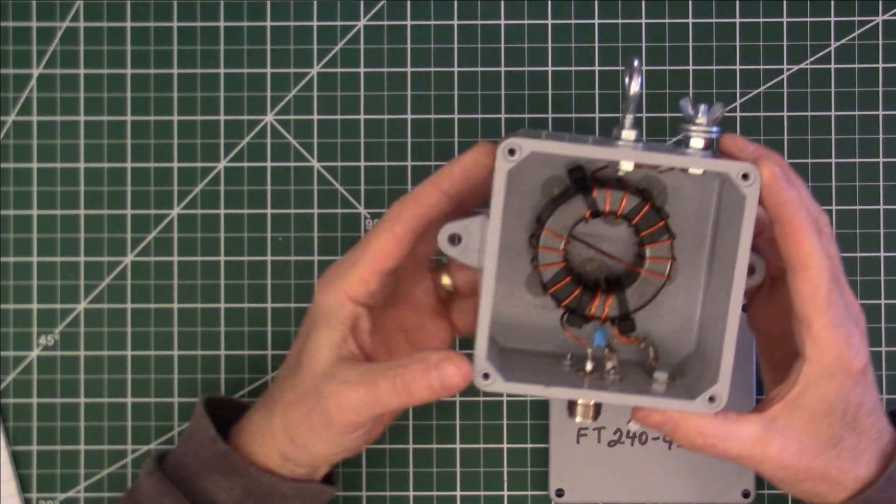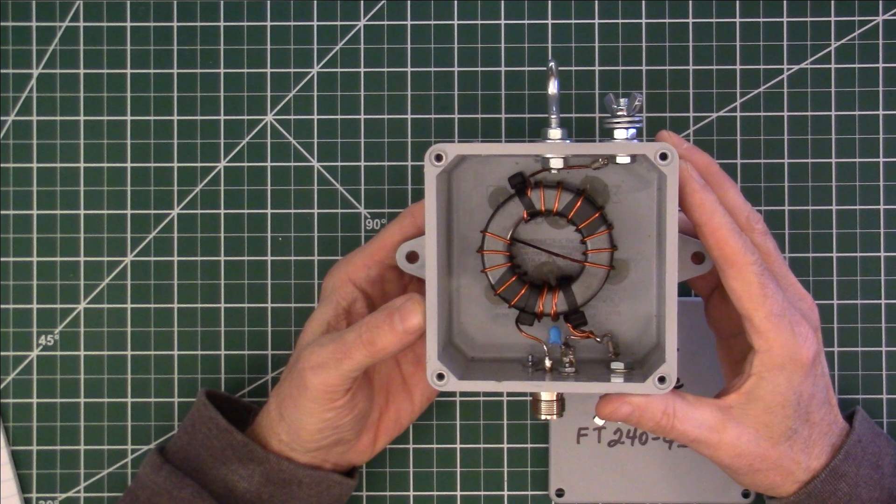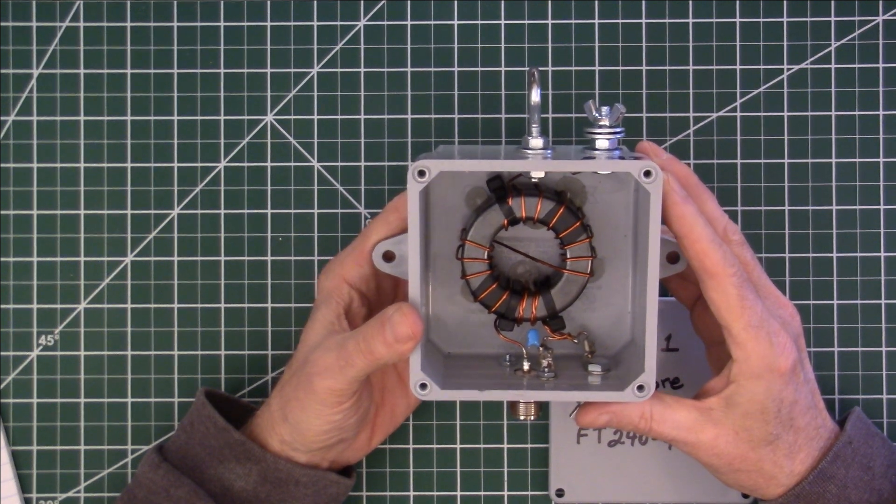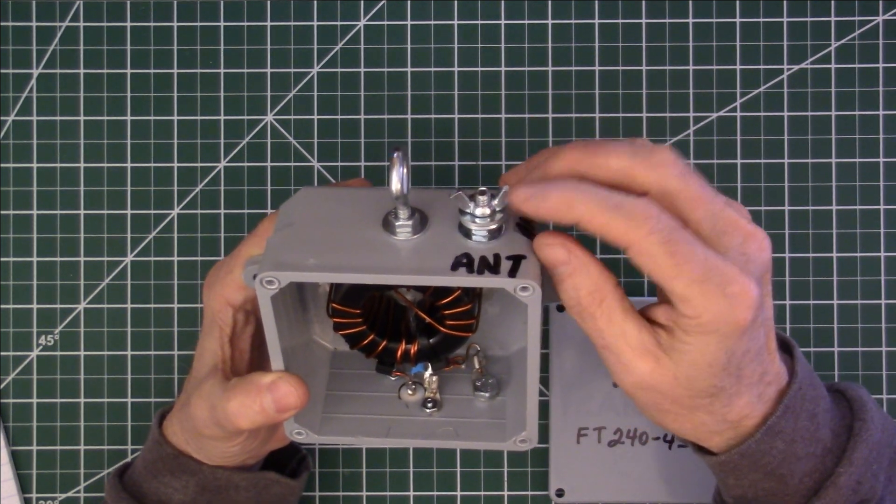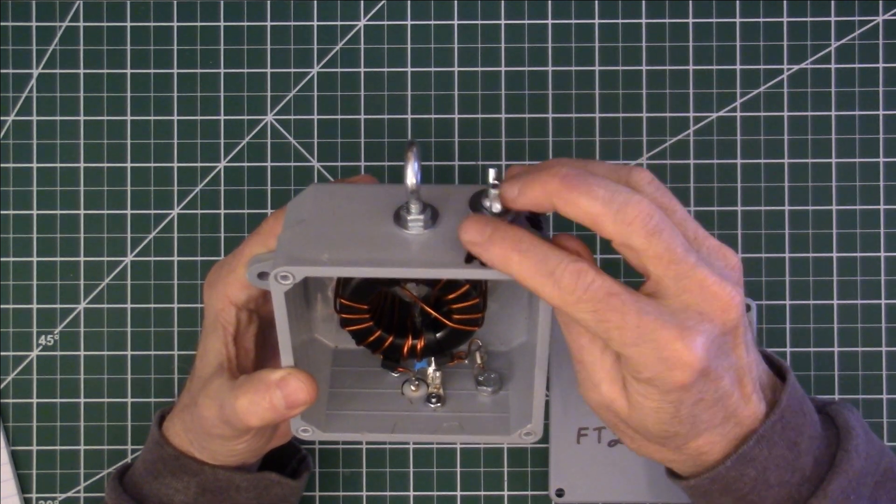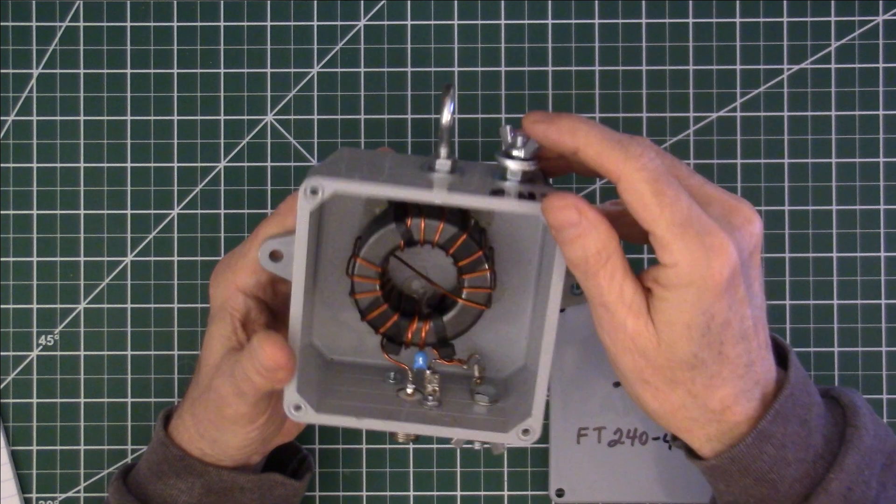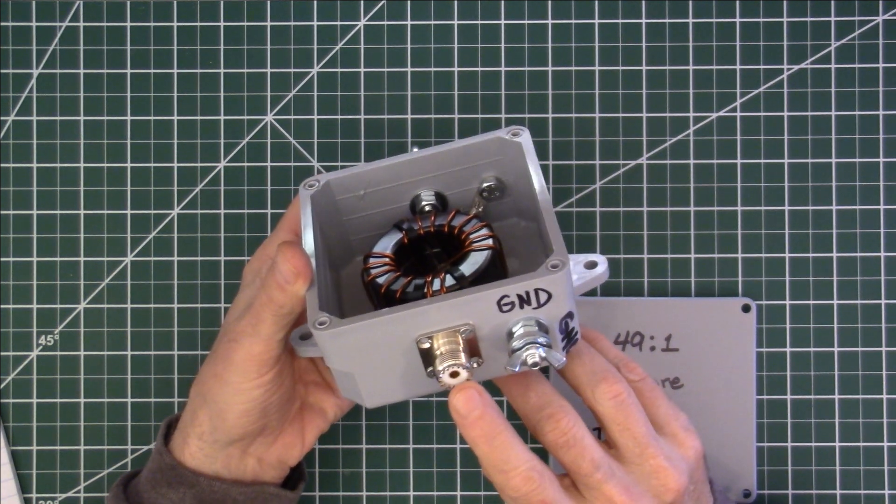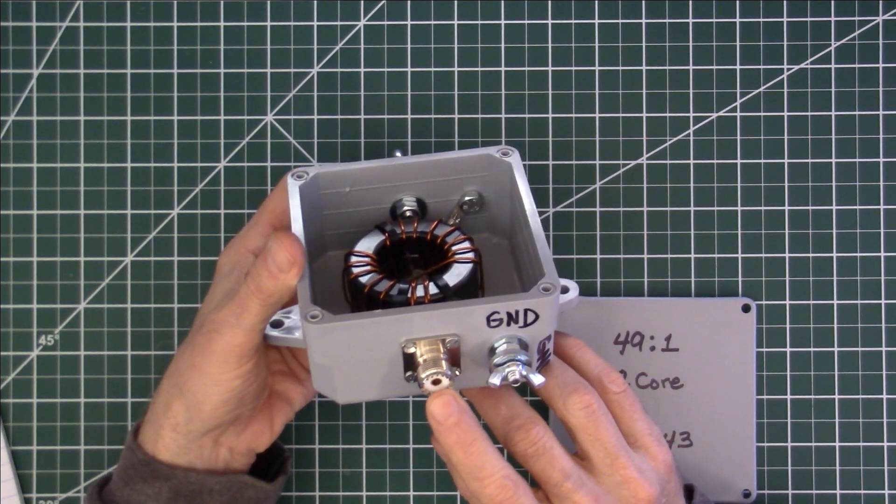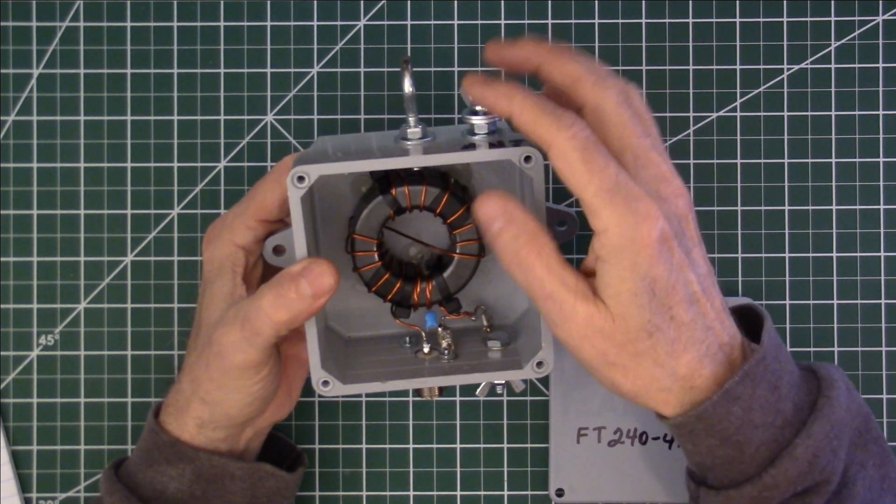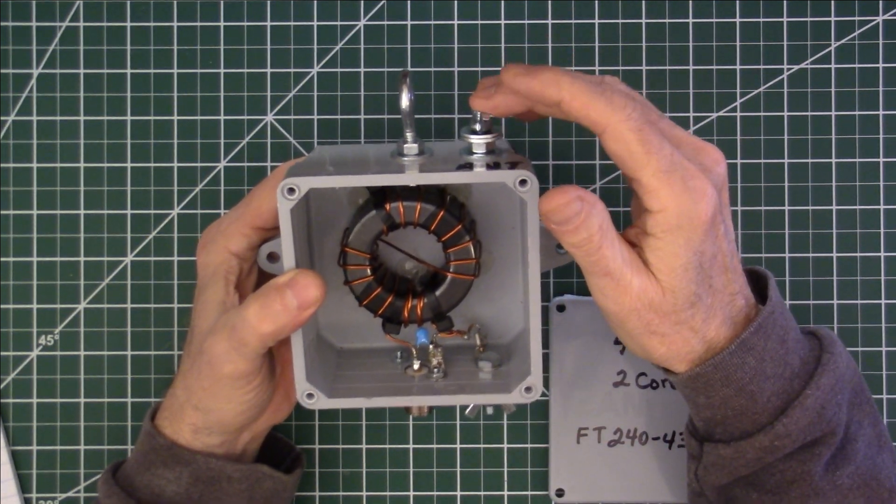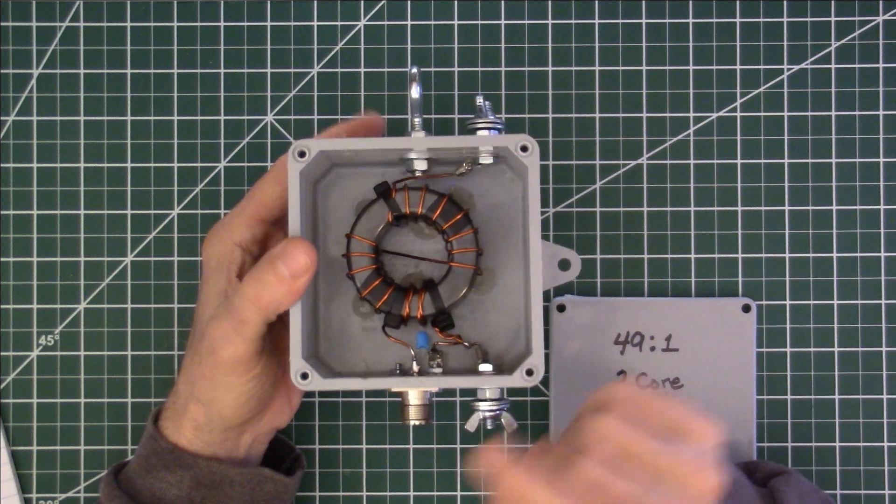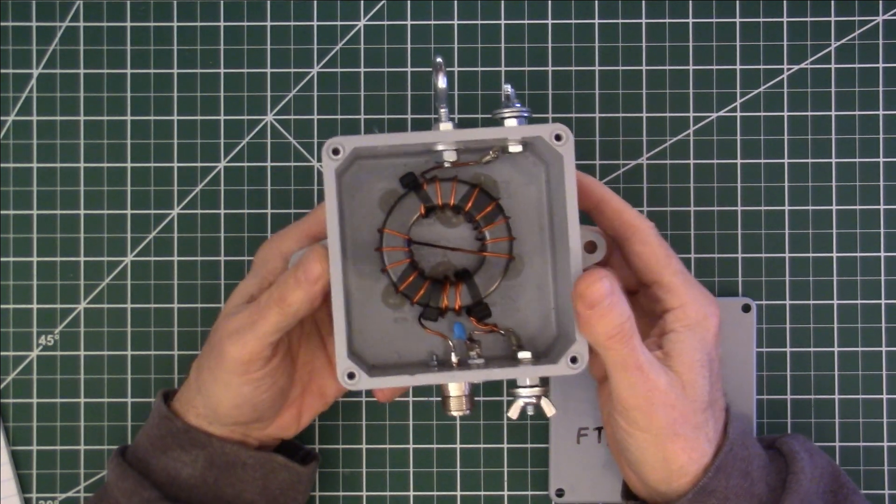Now this transformer that we built works according to the design, works according to spec. It does what it's supposed to do. It provides antenna matching from an end-fed half-wave antenna, which is between 2400 and 2600 ohms, down to the 50 ohms that our radio requires, which makes it 49 to 1. If you divide 2450 by 49, that comes out to 50. So that's the purpose of the transformer, and it works as designed.